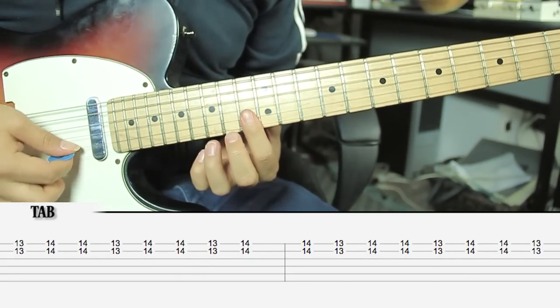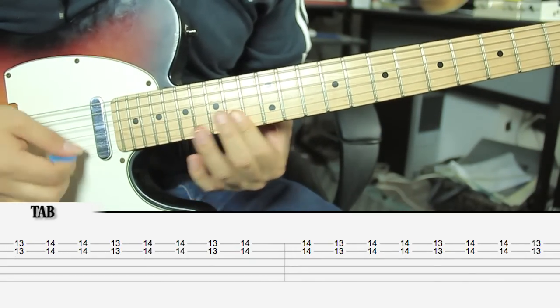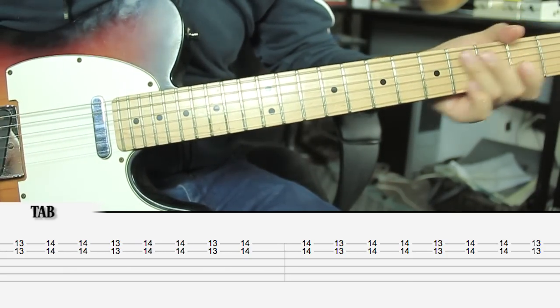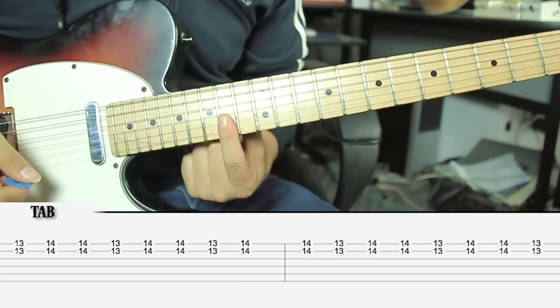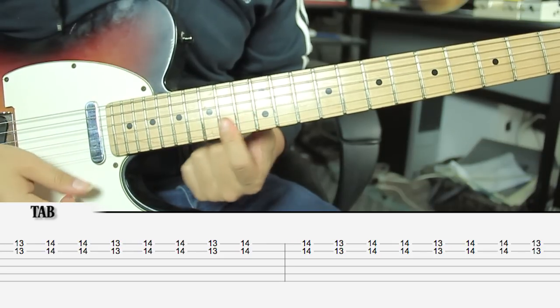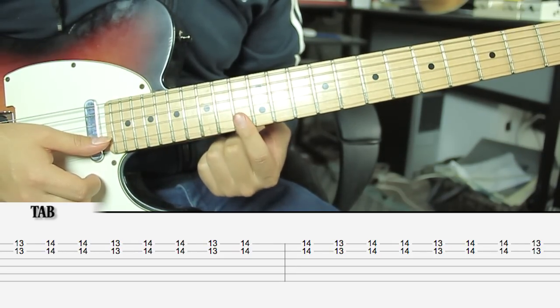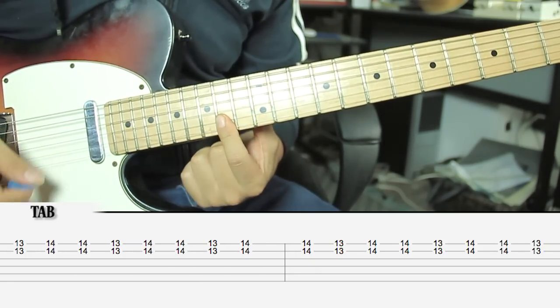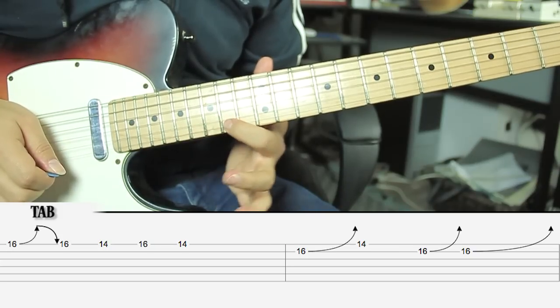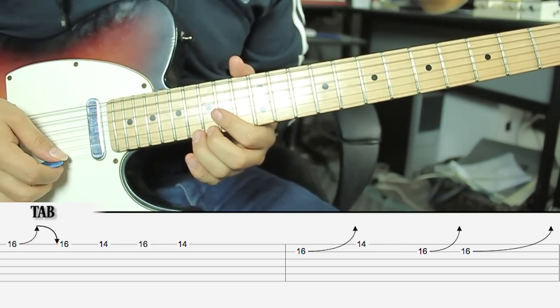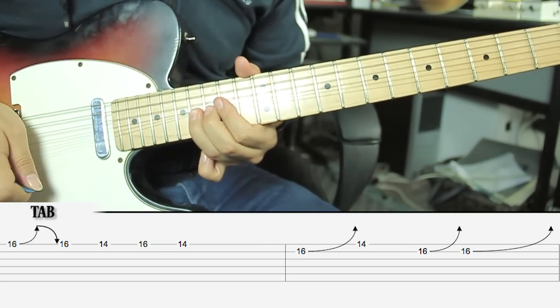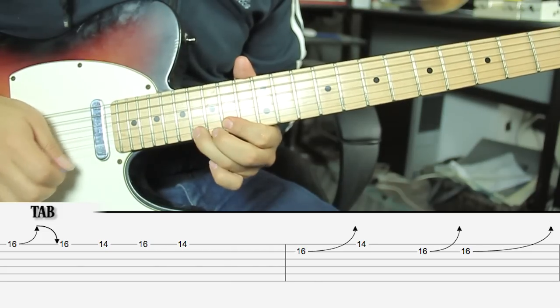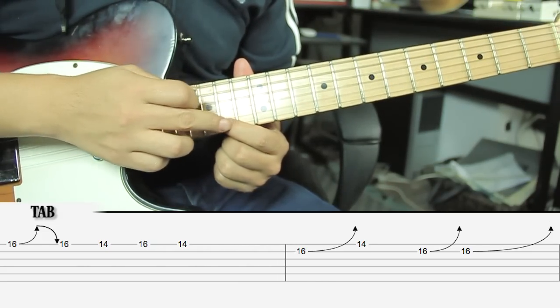And then comes this part. A half barre pressing the first two strings on fret thirteen, thirteen to fourteen, we just repeat. Then we do this. The only thing we do is a one-tone bend from G#, a release, and then a pull-off. And then we bounce between G# and F#.